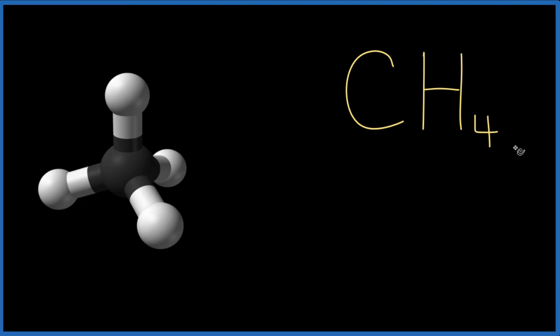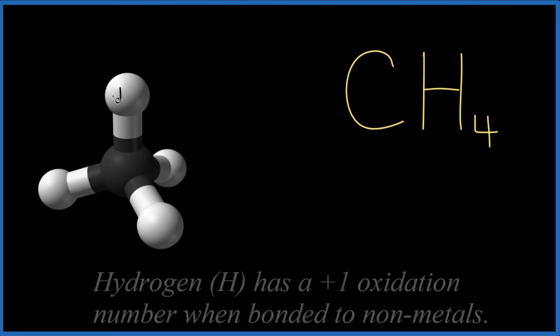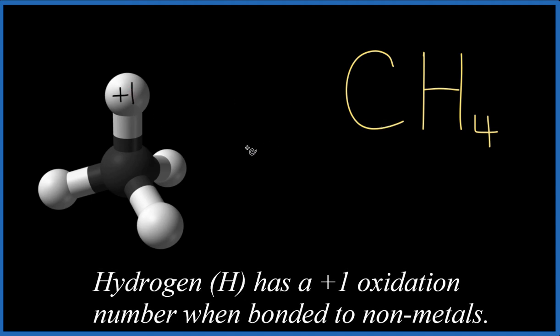To find the oxidation number on each of these elements, we know that hydrogen has a +1 oxidation number when it's bonded to a non-metal. Carbon's a non-metal, so each of these hydrogen atoms, the white atoms here, are going to be +1.